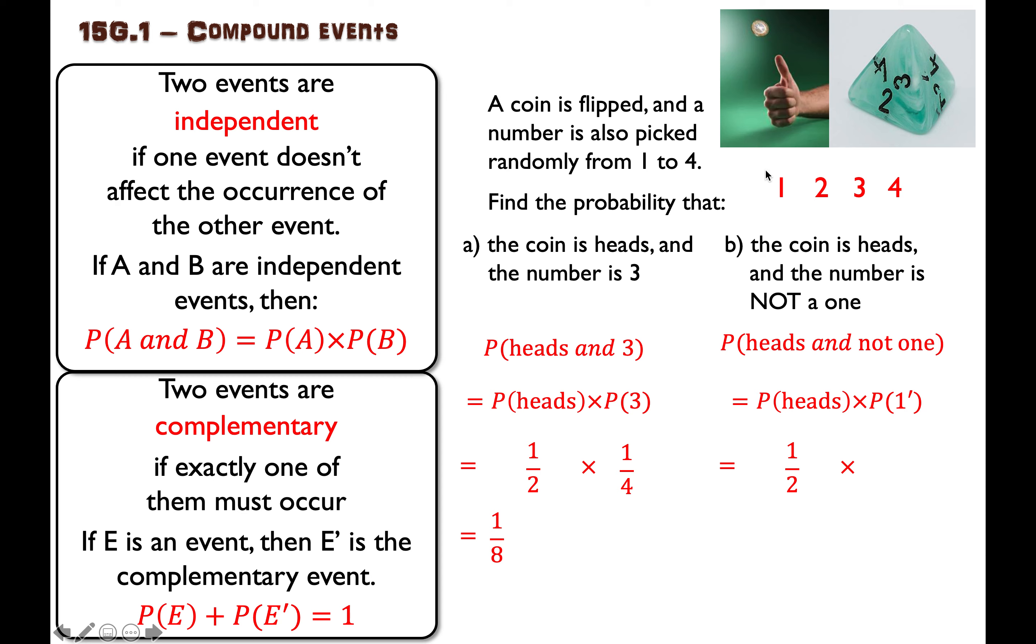There is one of these outcomes out of four that is getting a one, but there are three outcomes out of four that match this description here. Three of these outcomes are not a one. This is not a one. This is not a one. And this is not a one.